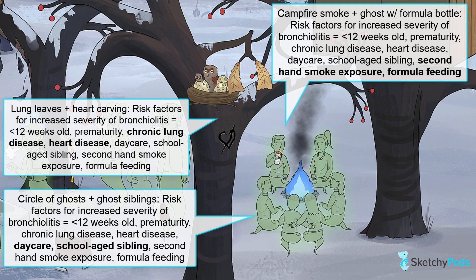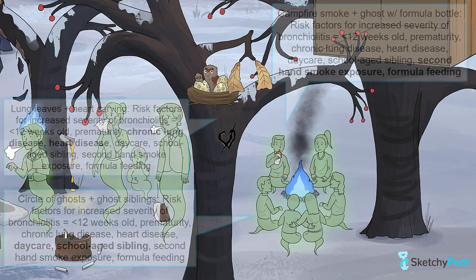Additional risk factors include daycare attendance, symbolized by this little gathering of ghost kids around the campfire, having school-aged siblings, secondhand smoke exposure at home — see the smoke coming from the fire — and a lack of breastfeeding in early infancy, hence this formula bottle.